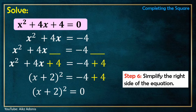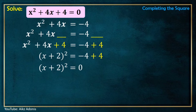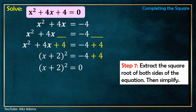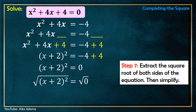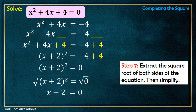Step 6: Simplify the right side of the quadratic equation. So -4 + 4 = 0. Thus we have (x + 2)² = 0. Step 7: Extract the square root of both sides of the equation and then simplify. The square root of (x + 2)² equals x + 2, since we just remove the square root symbol and exponent 2. The square root of 0 is 0, so we have x + 2 = 0.